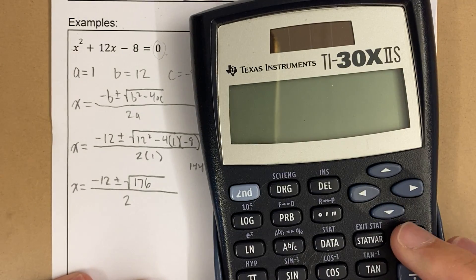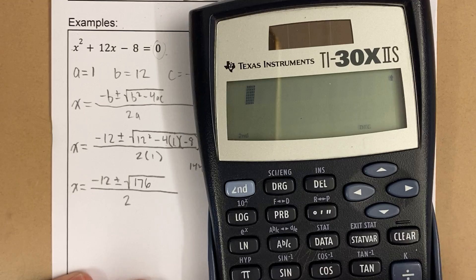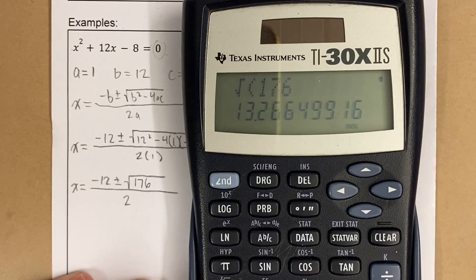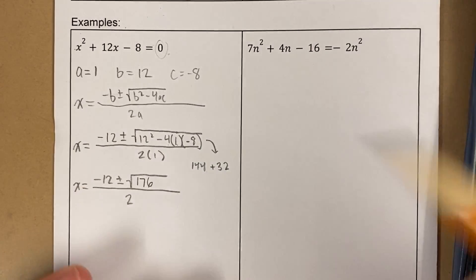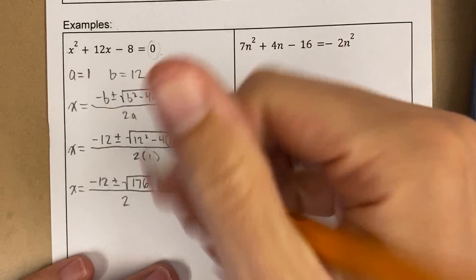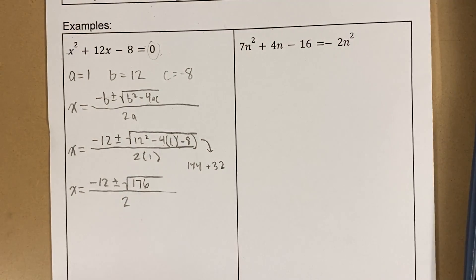Okay, now this is where things get a little bit different. So if I put square root of 176, it's just a decimal. So what we've done in the past is just box it, I'm done. However,